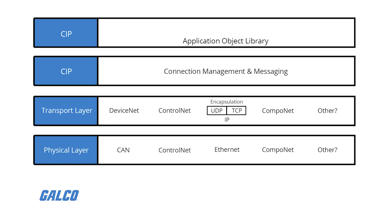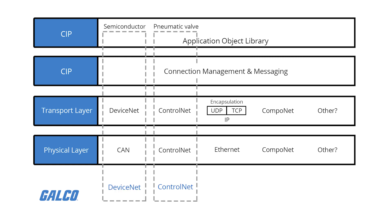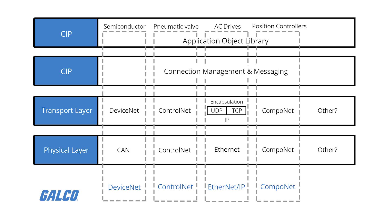Common Industrial Protocol sets the guidelines for routing, data management, and application-level behavior with an extensive library of messages that are relayed between the users and the network devices.